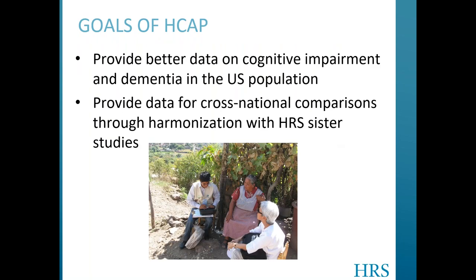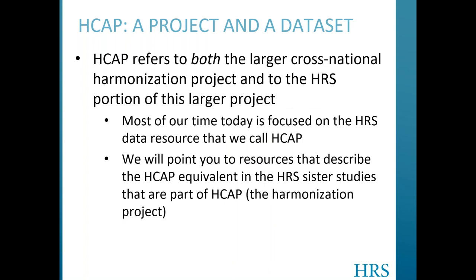The main goals of the HCAP project are twofold. To create a new HRS data resource that will provide better data on cognitive impairment and dementia in the U.S. In combination with other HRS data, this will allow us to better identify current and future trends in the determinants, prevalence, costs, and consequences of mild cognitive impairment, or MCI, and dementia in the U.S. HCAP is also designed to facilitate harmonization of cognitive measurement within HRS sister studies participating in the HCAP project, facilitating cross-national comparisons of the determinants, prevalence, and impact of MCI and dementia.